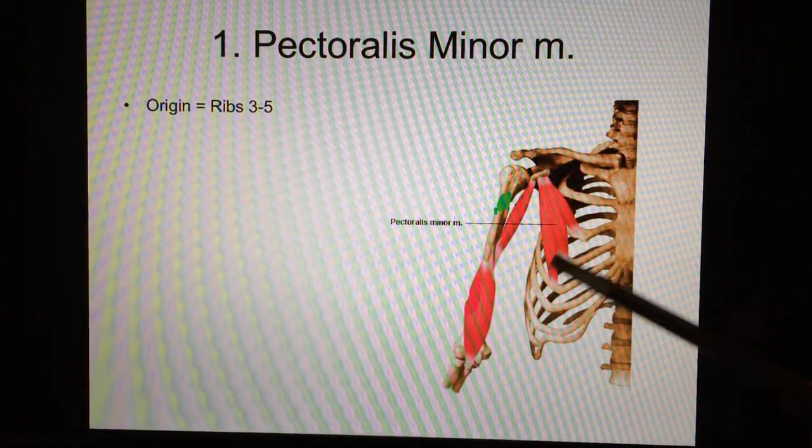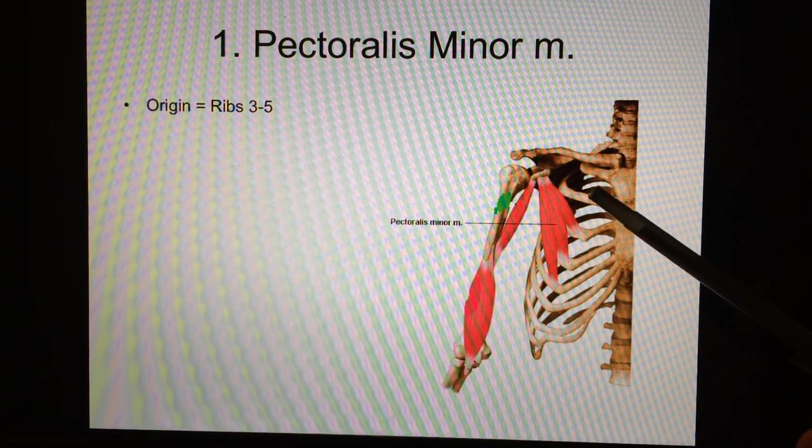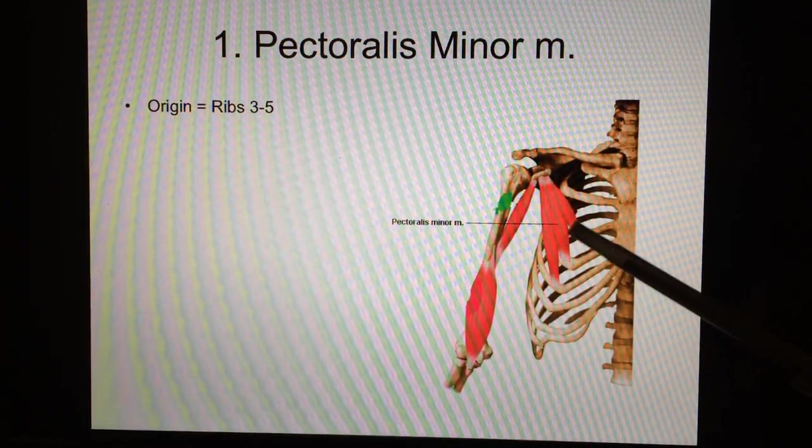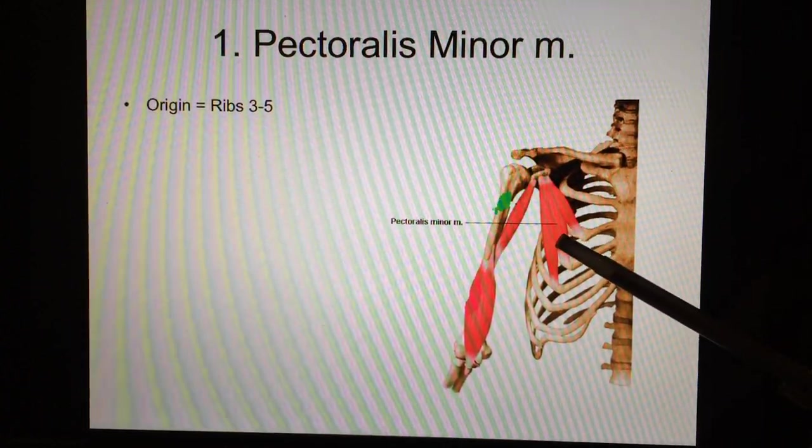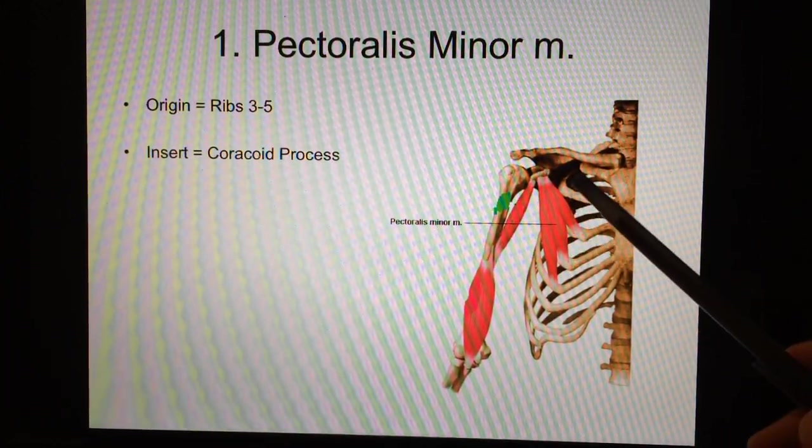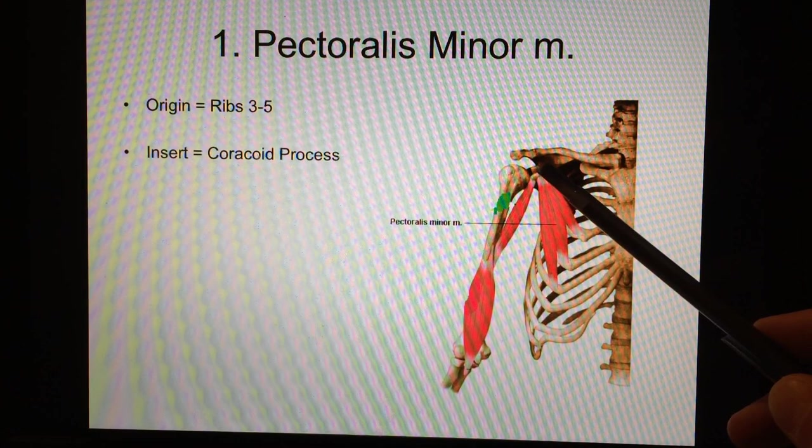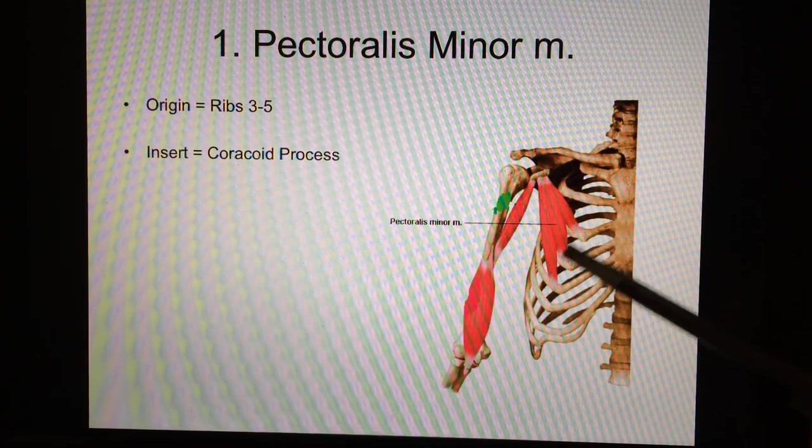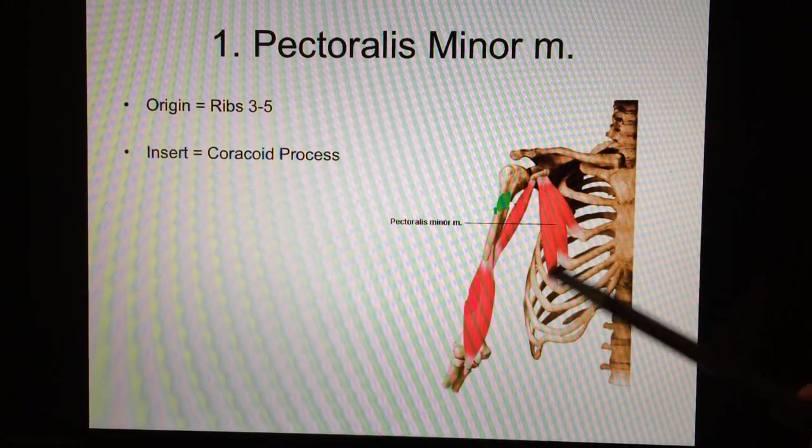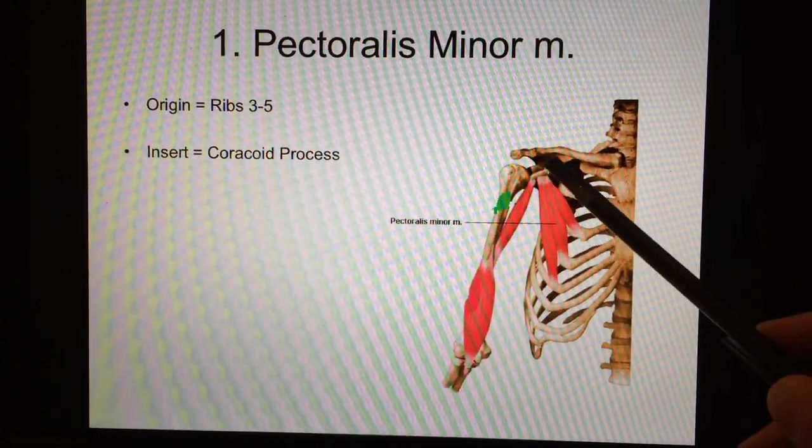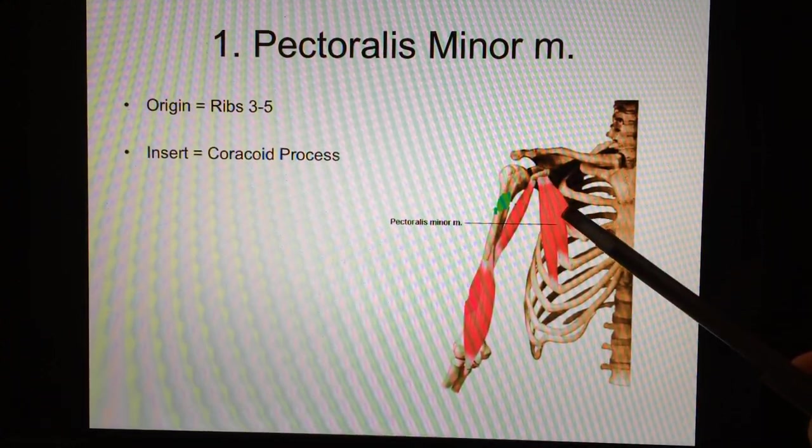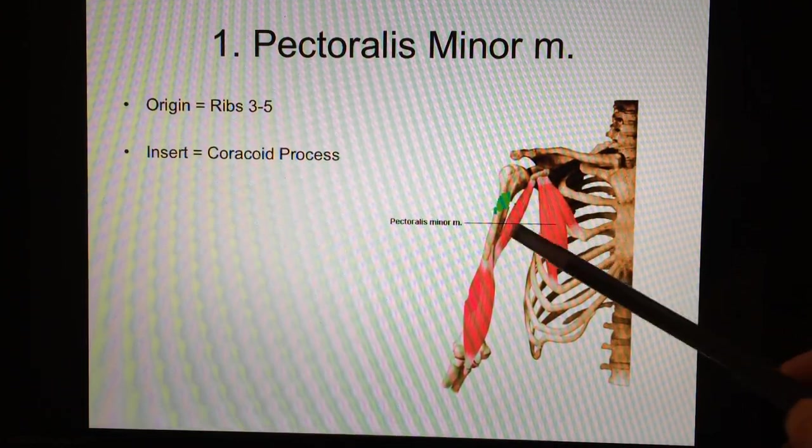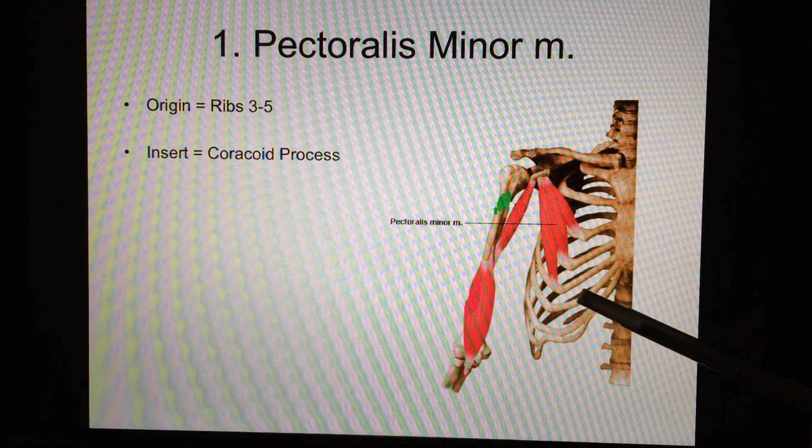Let's take a look at the origin. The origin is ribs three through five. So there's rib one, two, three, four, five. That's the origin. That's where it's going to stay still. The insertion is the coracoid process. That's a projection that comes out of the front of the scapula. Here's the origin, doesn't move. Here's the insertion. And remember, you don't have to use these three bundles all at the same time. You can use them separately. So we have a couple of different motions that are going to occur.